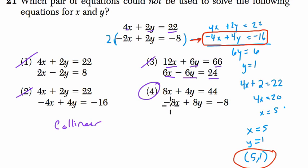But the second equation, something must be wrong. Let's see what it is. They multiplied negative 2x by 4 to get negative 8x, and 2y by 4...